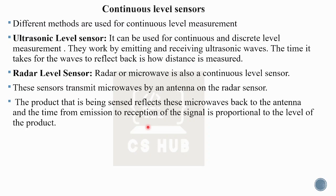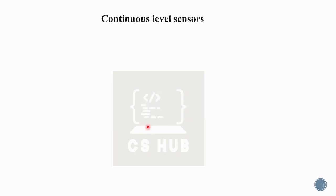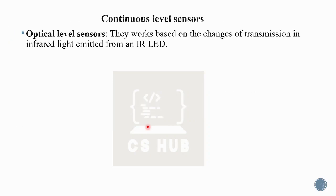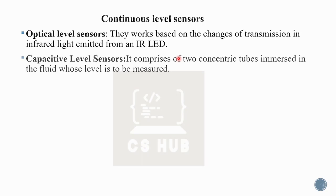Optical level sensors use infrared light. They work based on changes in the transmission of infrared light emitted from an IR LED. This is how optical level sensors detect the fluid level.